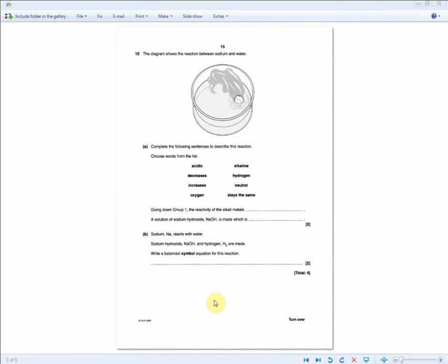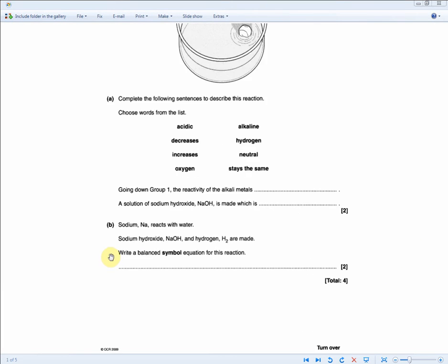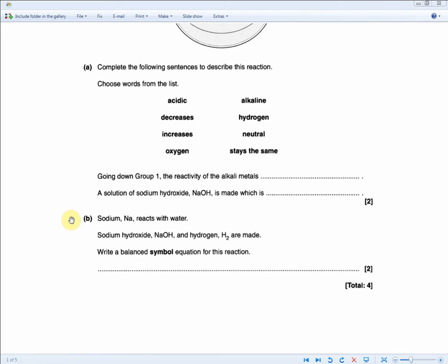So now we move on to the first question of the chemistry section within unit 1. If we zoom in, we'll begin. So it reads, sodium Na reacts with water.